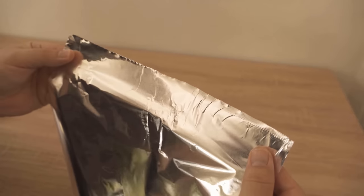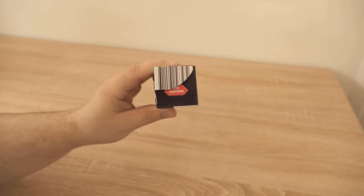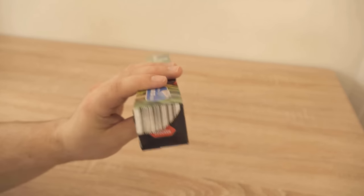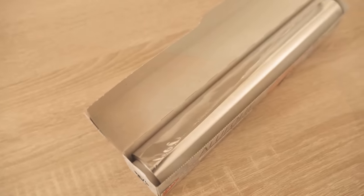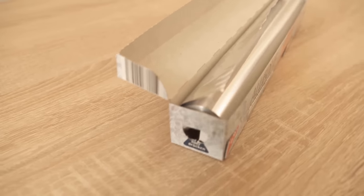This trick works not only with aluminum foil, but also with cling film. Just about every manufacturer has these little sides integrated where you can press in, so that the roll is then held in the package.